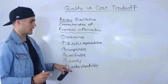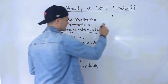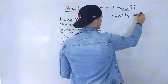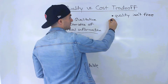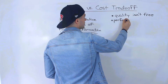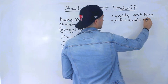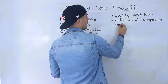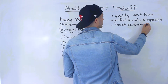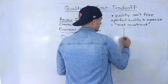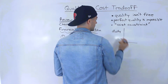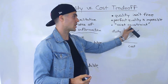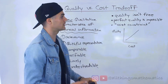What I want to mention in this video is that to get good quality — like anything else — quality isn't free. Quality financial information isn't free, and actually perfect quality is pretty much impossible. The reason why is because there's a cost constraint. If we made a little graph of this, the more quality you want, the more it's going to cost you. To have that perfect quality, it's going to be super expensive, and that's why perfect quality is pretty much impossible.